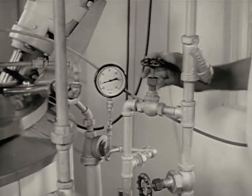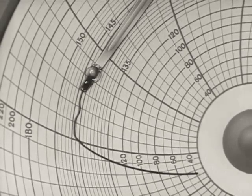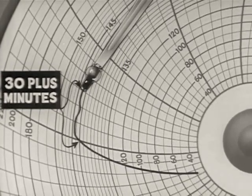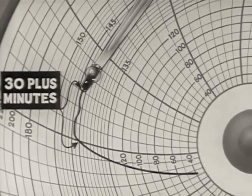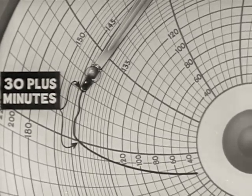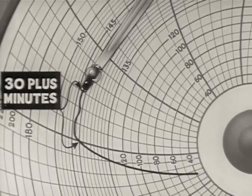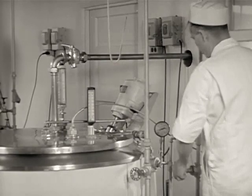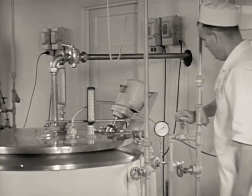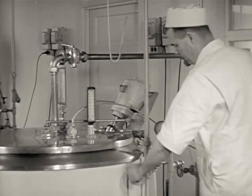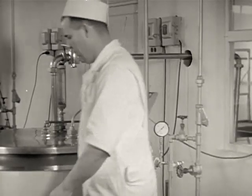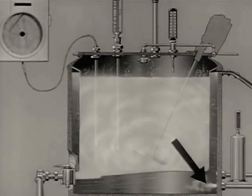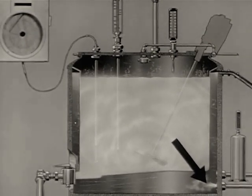Pasteurization requires time as well as temperature. The milk has been held for a full 30 minutes at 143 degrees or more. It is now pasteurized. All disease bacteria have been killed. It is safe milk. From now on, great care must be taken to prevent recontamination. Turn off the steam to the jacket and to the airspace heater. Turn on the cold water to the jacket to start cooling the milk. The cold water enters here, mixes with the water in the jacket, and runs out through this overflow pipe.